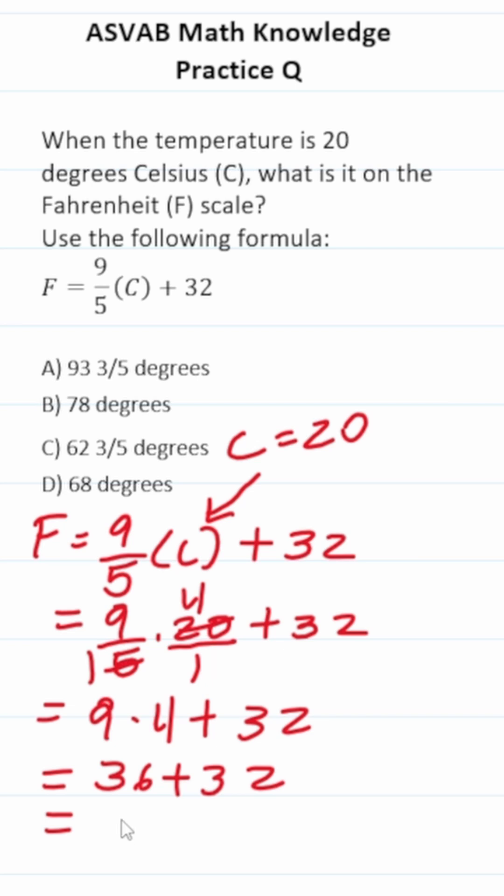Should be able to do this mentally. 30 and 30 is 60, 6 and 2 is 8. So the correct answer to this one is D, 68 degrees.